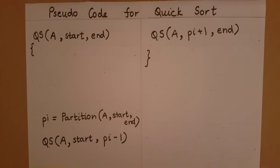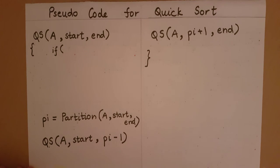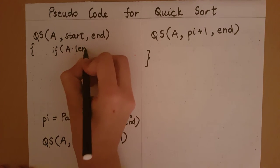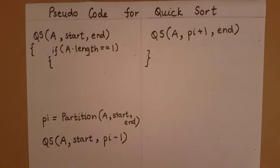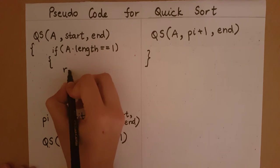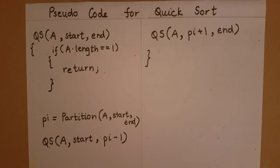If you remember from the quicksort algorithm working, we said that a single-element array is already sorted. So we define that base case here: if a.length equals 1, or if there is only one element in the array, we can say it is sorted — no more work is needed and the partition algorithm need not do anything. Therefore we return. This is the pseudo code for the quicksort algorithm.